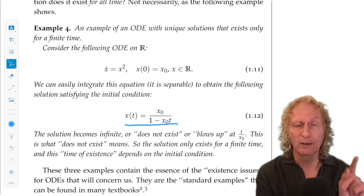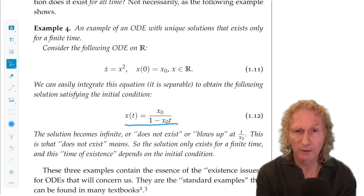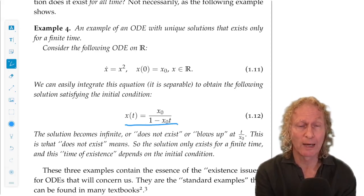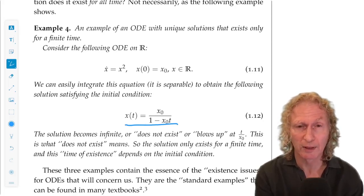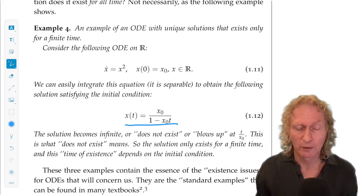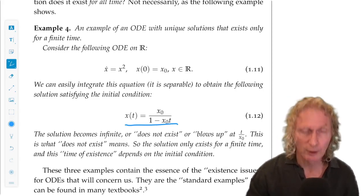So, we see that that time of non-existence, T equal 1 over x naught, depends upon the initial condition. x naught equals 0, or x equals 0, is a solution that exists for all time. But any other solution exists for a finite time. Non-existence means blow up. Go to infinity.